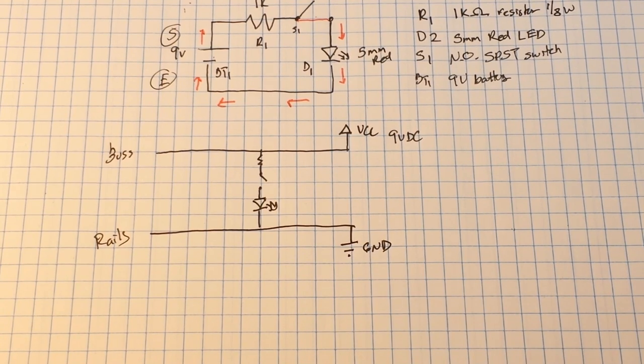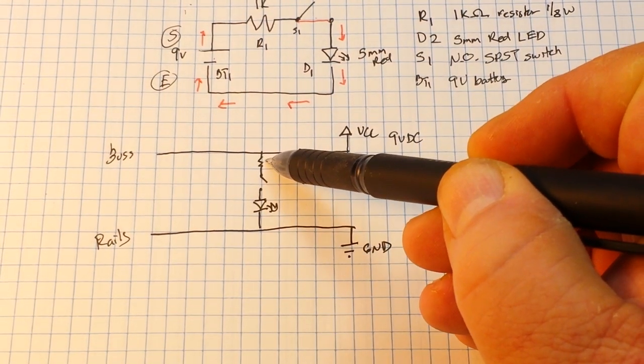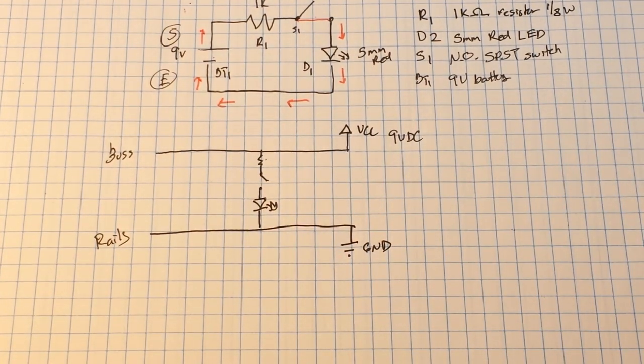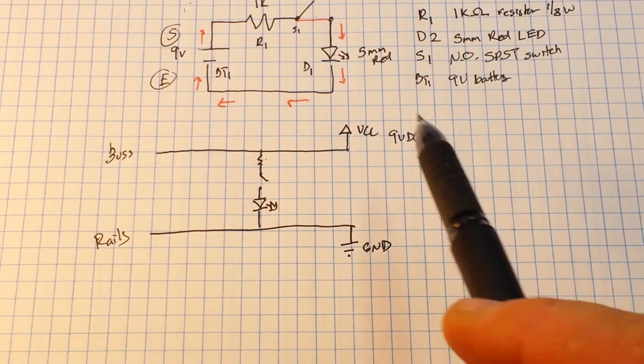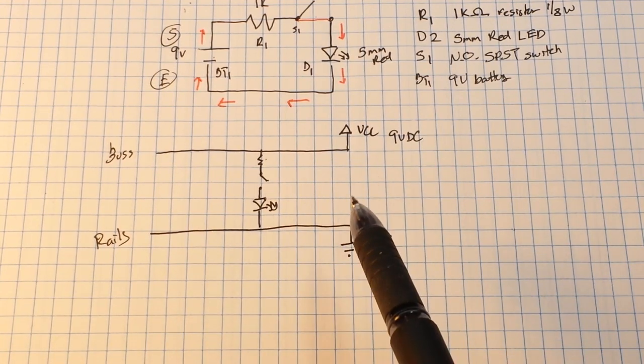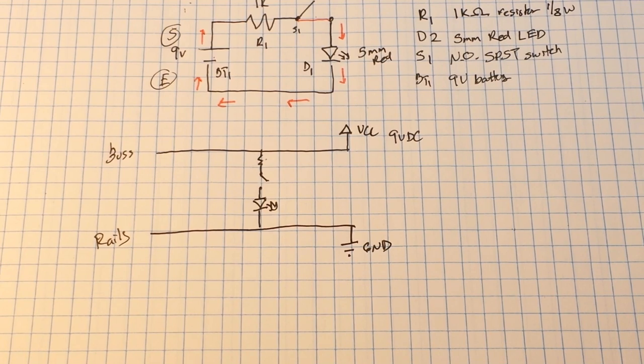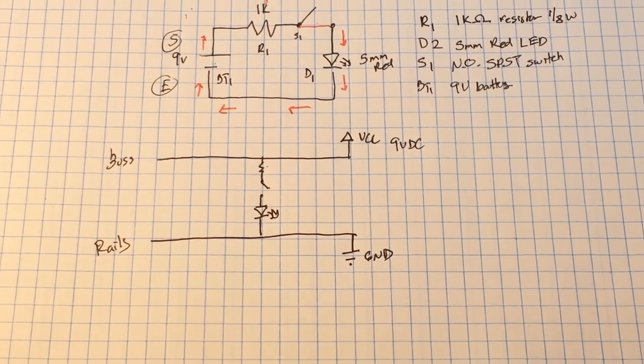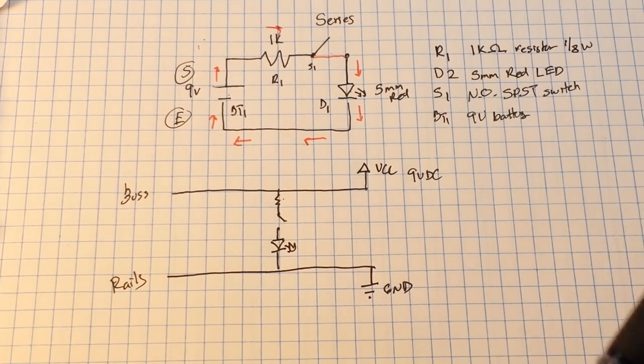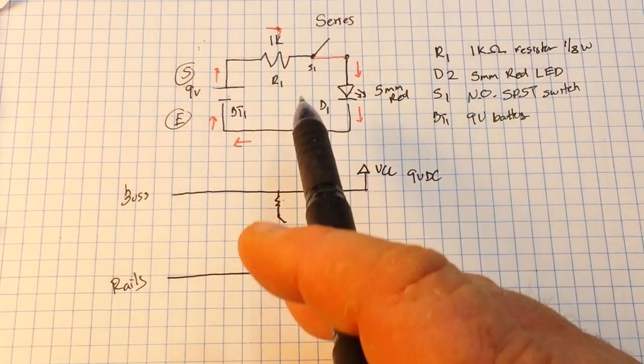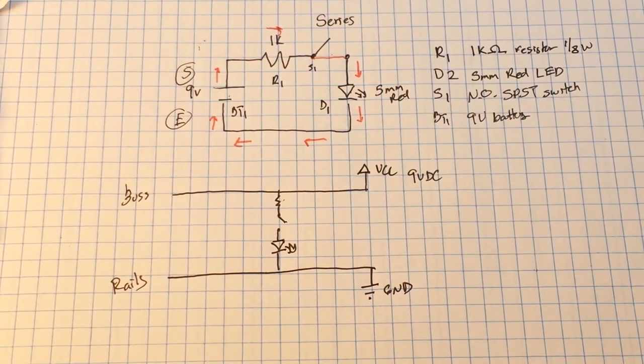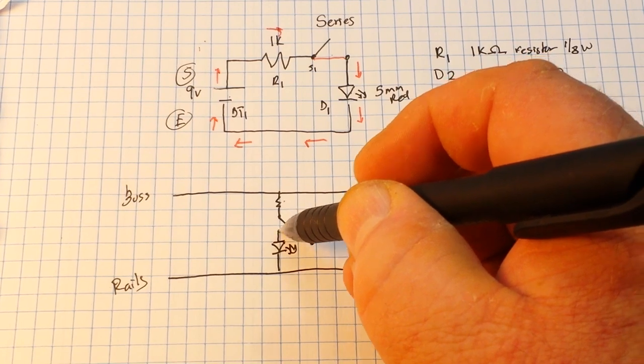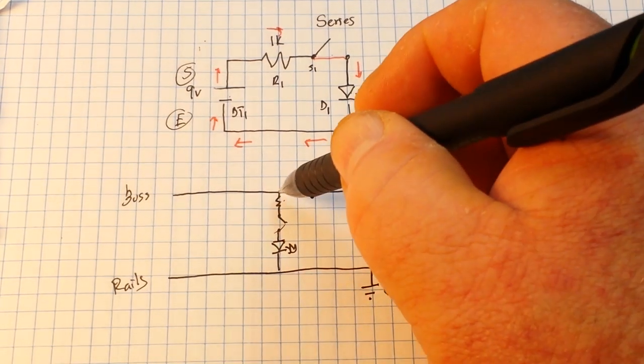At the bottom we have our ground rail or also known as the reference rail, and it uses the ground symbol there. We have our resistor, our switch, and our diode. So even though things are split up a little bit different, everything still flows in exactly the same way. To sum this up really quickly, we have a series circuit with four components, and in either way when we close the switch it creates a loop that allows current to flow.